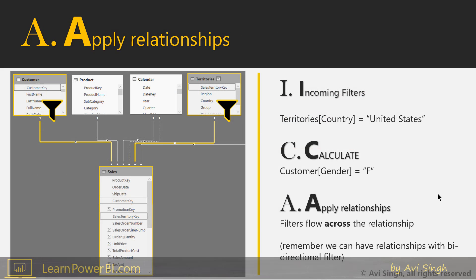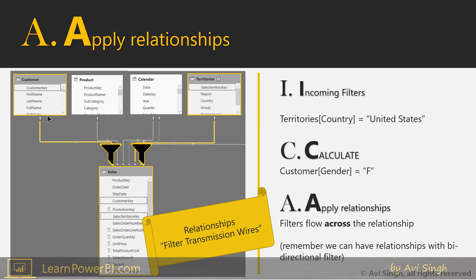The third step is to apply the relationships — filters flow across the relationships. And this is where all the action is. If this were not the case, then really none of this would impact our Sales table. But by virtue of relationships, which are really filter transmission wires, the filters get transmitted. This happens by the mechanism of the key — it filters Customer[Gender] equals F, but that in turn filters the Customer Key, which is transmitted by the relationship, filters the Sales Customer Key, and hence the Sales table. Also keep in mind that relationships can have bi-directional filtering, so filters can flow in both directions depending on the cross-filter setting. In this case it's only one-directional.